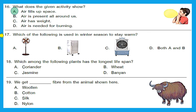Question 17: which of the following is used in winter season to stay warm? Option A is a fan — we use that in summer. Option B is a heater, and a heater is used in winter season to stay warm. We already got our answer: option B.